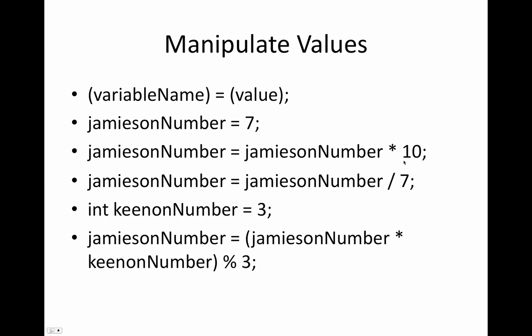Or you could say Jameson number equals Jameson number times 10, and then it's going to go find the Jameson number drawer, pull out the number that's in there, currently a 7, multiply it by 10, make it 70, and then stick it back in the drawer.